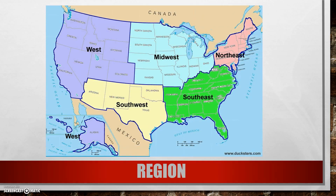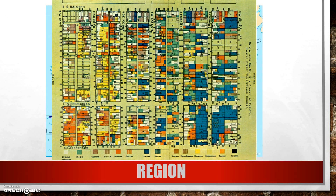We also divide the country into regions. These are examples of political regions — there are five on this map. We call them political regions because they're divided based on the shapes of states, and the shape of a state is determined by people, usually governments — politicians — which is why we call them political regions. We also talked about cultural regions, shown on a map of different cultures and nationalities living in a section of Chicago in 1888, based on ethnicities, nationalities, and languages.